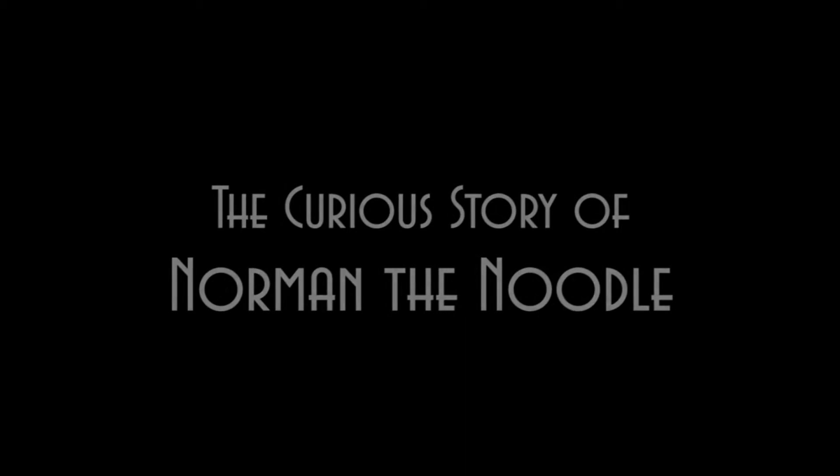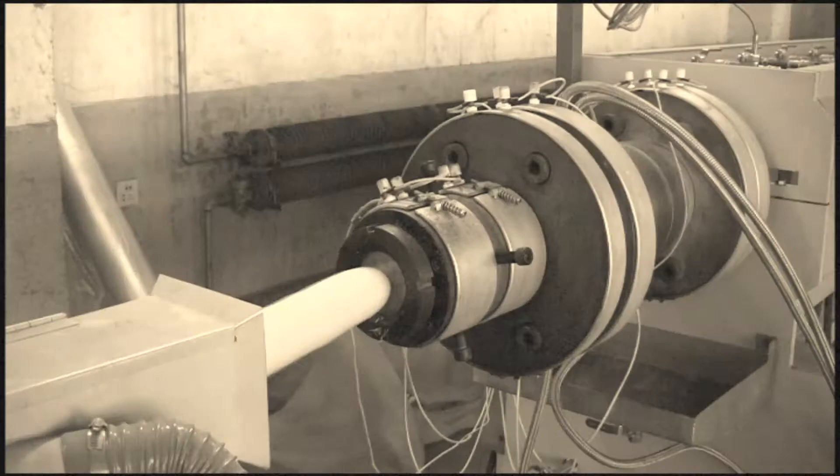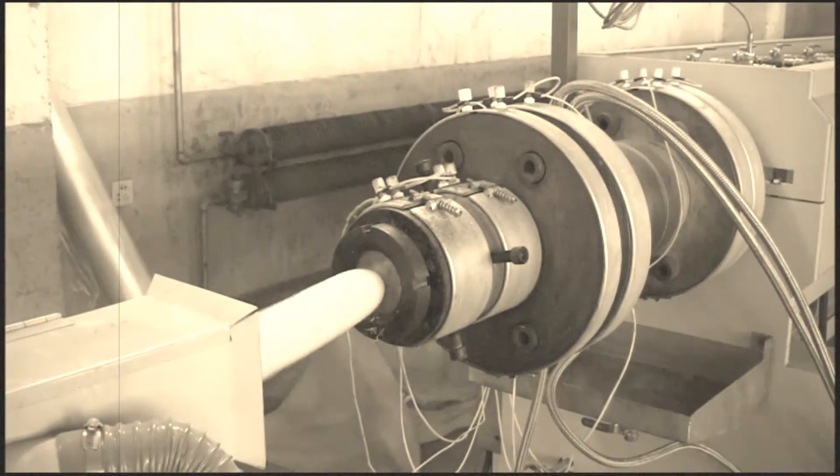This is the story of Norman, an innocuous green pool noodle that found his way into the hearts of the Riveters in 2015.